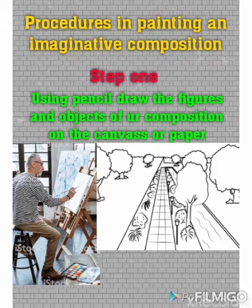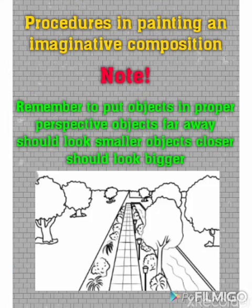Procedures for painting an imaginative composition: Step one — using a pencil, draw the figures and objects of your composition on canvas or paper. You should have a comfortable seat because you may be sitting for a long while. Use an HB pencil because they are soft and can easily be wiped away.